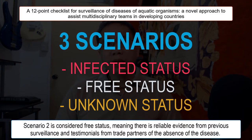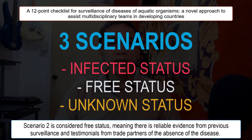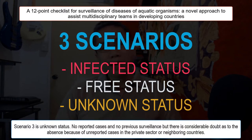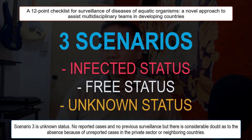Scenario one — infected status — means that a particular disease X has been reported in literature to be present in both cultured and wild species, and has been reported to competent authorities of the country who forwarded this to the OIE. Scenario two is considered free status, meaning there is reliable evidence from previous surveillance and testimonials from trade partners that the country is considered free from the disease. Scenario three is unknown status — no reported cases and no previous surveillance, with considerable doubt as to the absence or presence of the disease due to maybe unreported cases in the private sector or among neighboring countries.